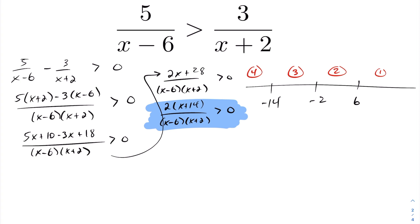Drawing a number line and examining each interval: I have negative fourteen as a root of the numerator, and negative two and six as values where the denominator is undefined. We place open circles at negative two and six, since those values must not be in our solution set. That gives us four intervals to examine.